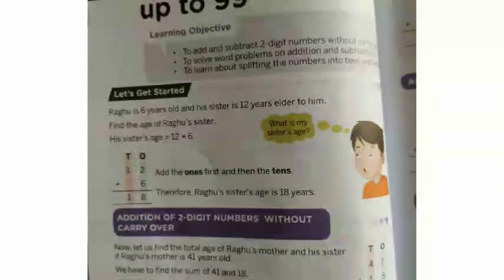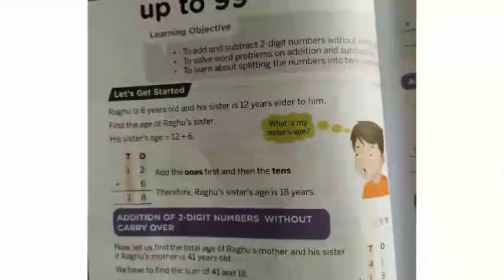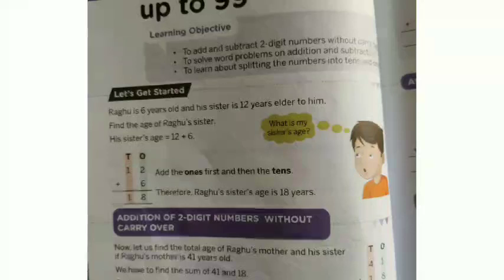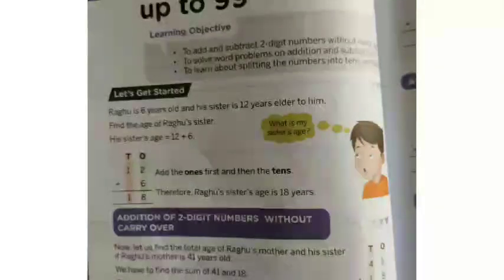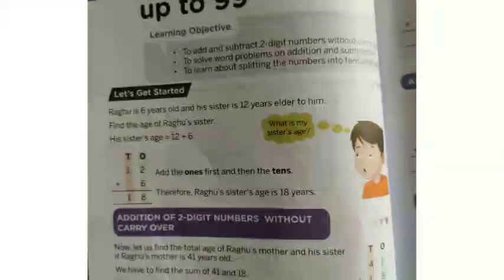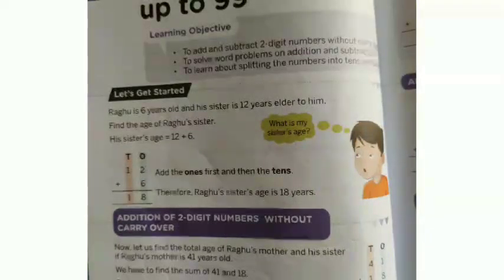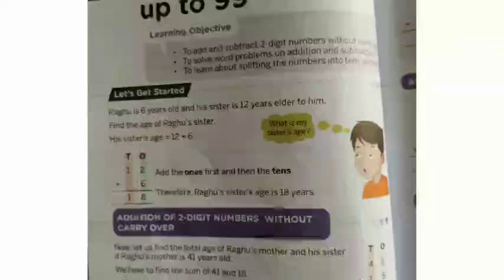Raghu is six years old and his sister is twelve years older than him. Find the age of Raghu's sister. Raghu is six years old and his sister is twelve years older, so we add twelve plus six, which equals eighteen years.